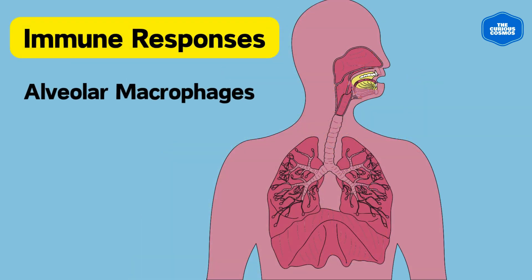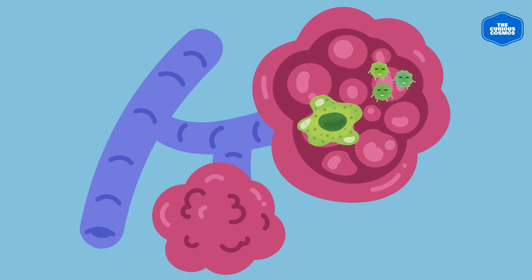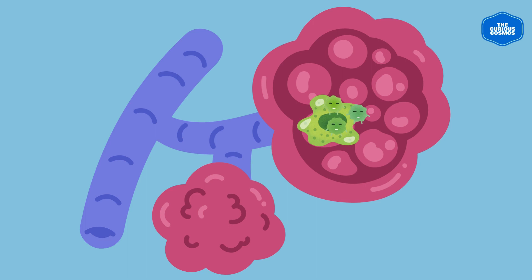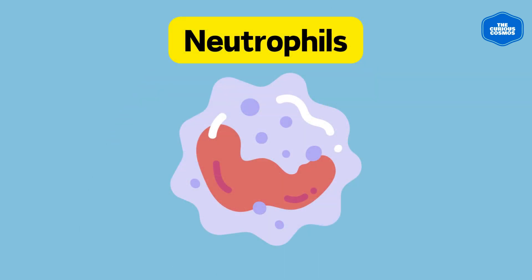Alveolar macrophages are white blood cells that reside in the alveoli — the tiny air sacs of the lungs. They act as the respiratory system's first line of cellular defense, engulfing and destroying inhaled pathogens.